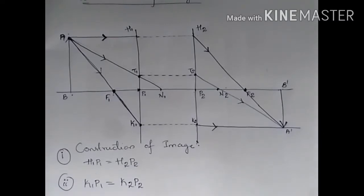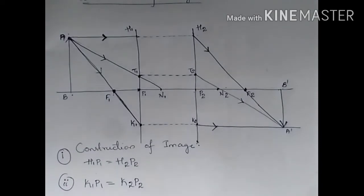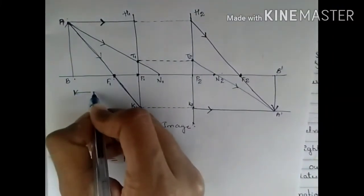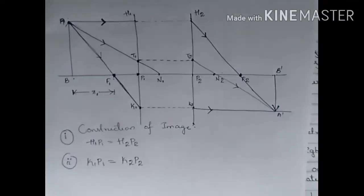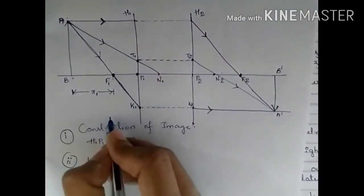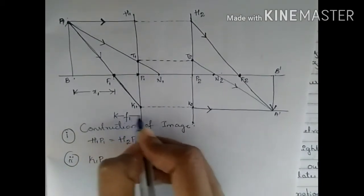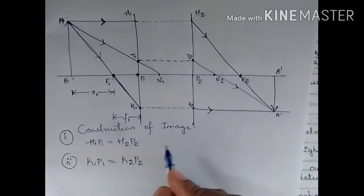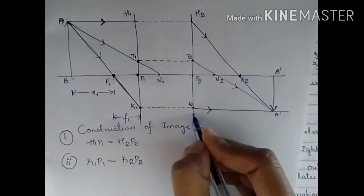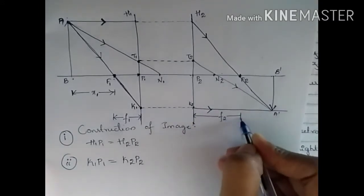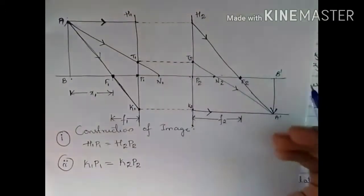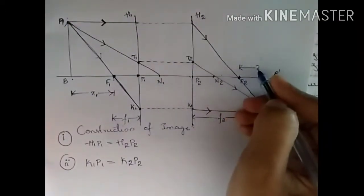You have to learn all three points, then you can easily draw the image of an object placed on the principal axis. The distance from B to F1 is X1, the distance from F1 to P1 is F1, the distance from P2 to F2 is F2, and the distance from F2 to B' is X2.